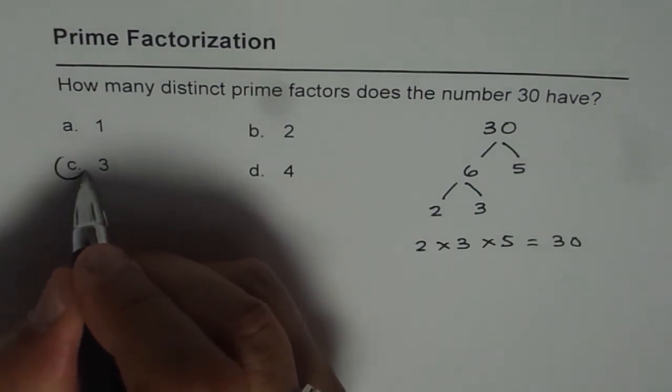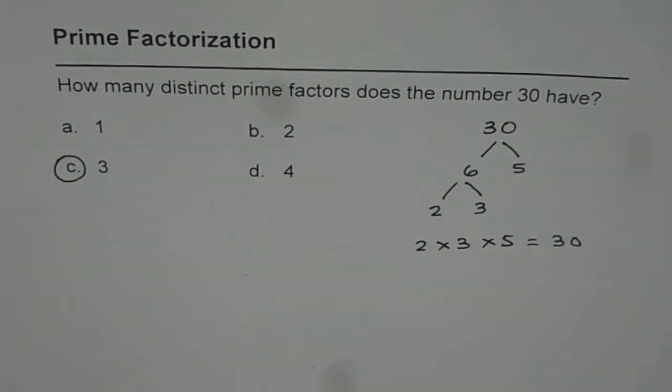So it has three distinct prime factors. The mistake you could have made is to include 1 in your list. 1 is not a prime number, so don't include that.